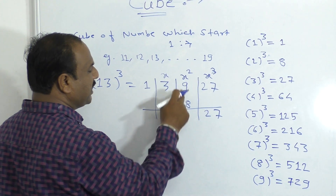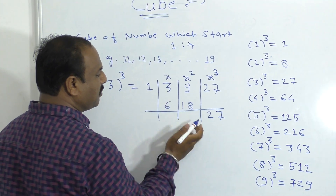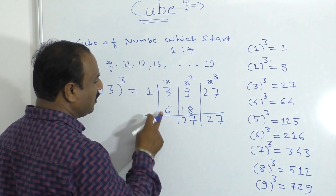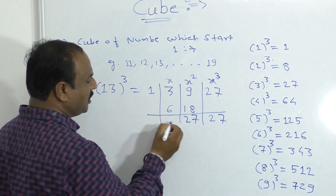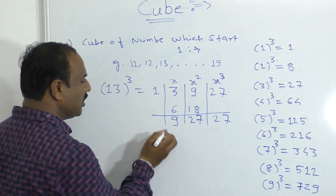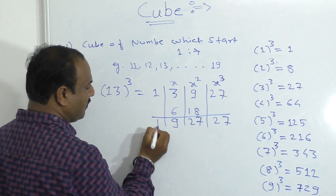We do addition. What is 8 plus 9? This is 27. And this is 3 times. This is the 1 as it is.